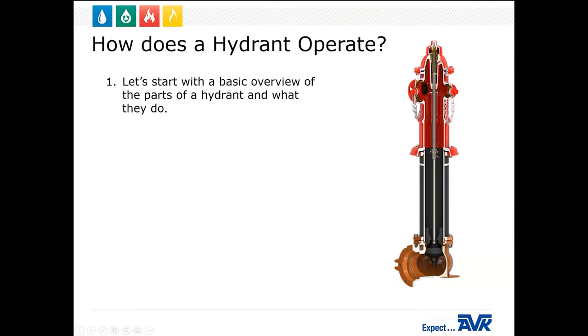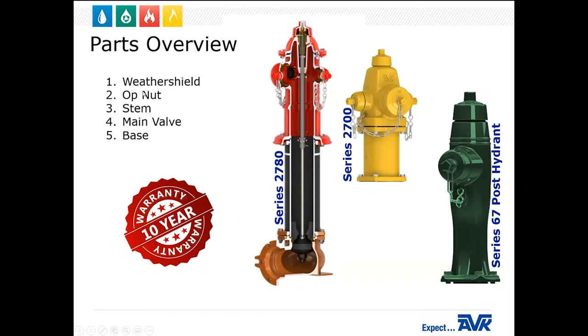Here we're going to be highlighting our 2780 model, also known as the nostalgic. A couple of the parts that are essential to the operation of the fire hydrant - number one, I like to highlight the weather shield. If you see on the top of all three of these hydrants, we have a weather shield. That comes standard with AVK hydrants. This actually attaches directly to the operation nut on this hydrant. You can see this is our 2780, this is our 2700 (also known as our modern style), and this is our post hydrant or flushing hydrant. They all have that weather shield on them.